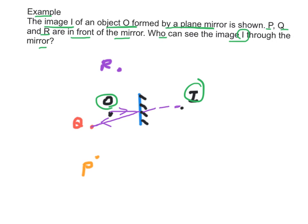However, the line joining P and I and the line joining R and I will not intersect the mirror. Therefore, P and R cannot see the image through the mirror.